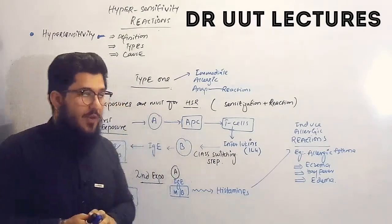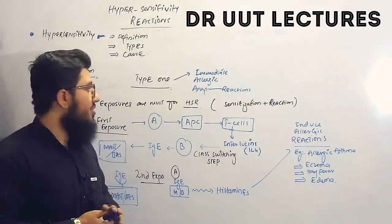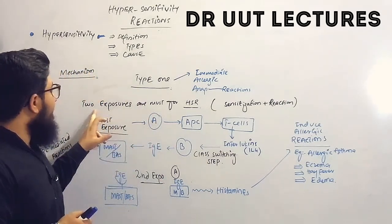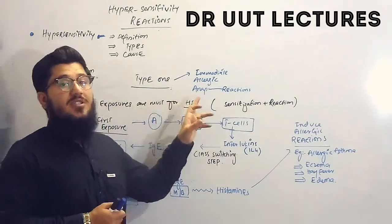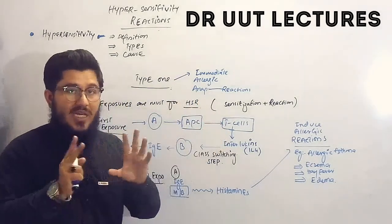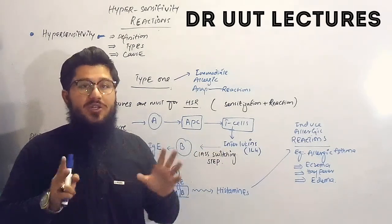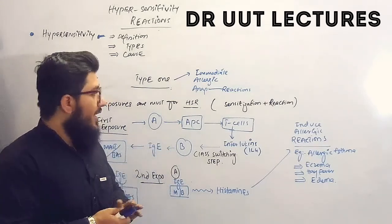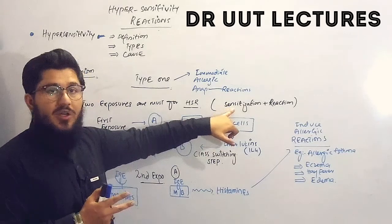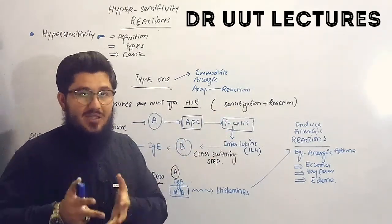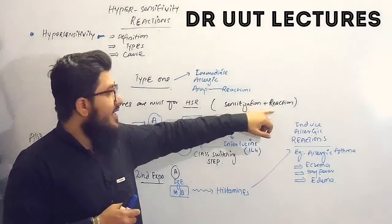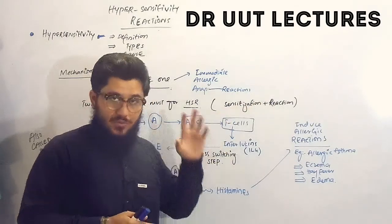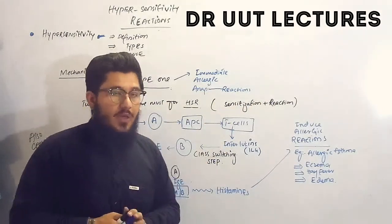Type 1 reactions are also named immediate reactions, allergic reactions, or anaphylactic reactions. Two exposures are required for all types of hypersensitivity reactions — types 1, 2, 3, and 4. In the first exposure, our body and immune system become sensitized. In the second exposure, the actual reaction is seen.